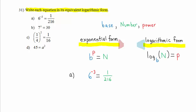Let's convert it to logarithmic form. Log base B of the number N, 1 over 216, equals the power P, negative 3. And here we have the equivalent logarithmic form.